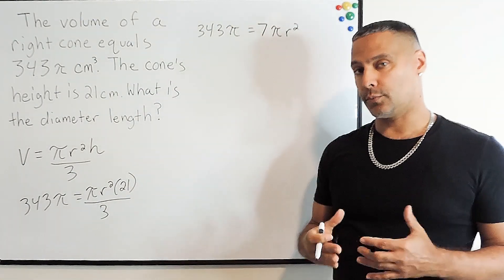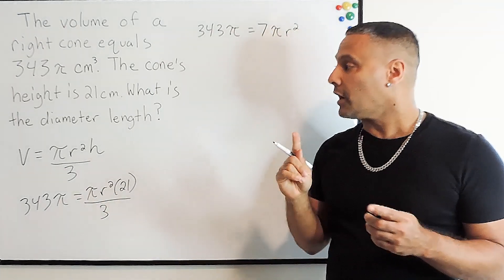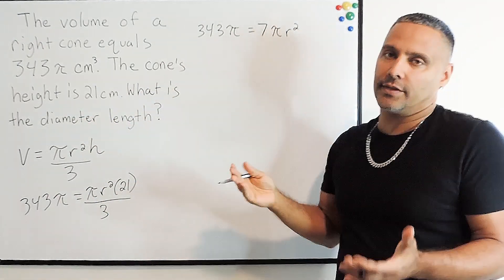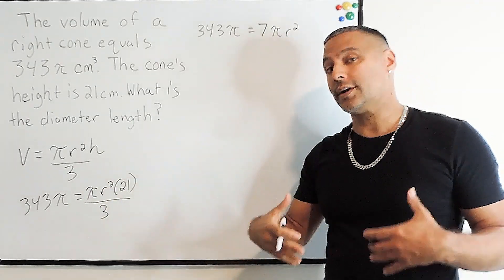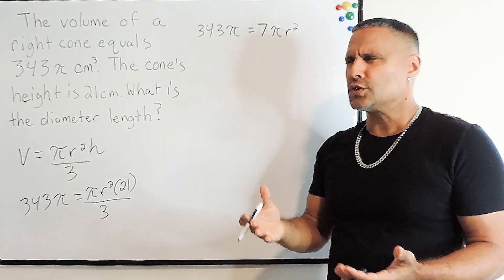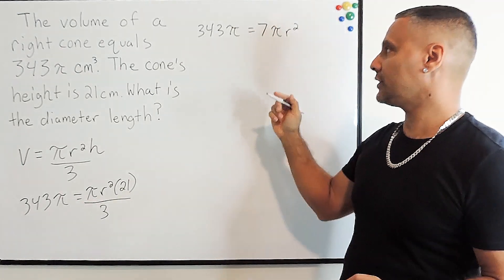Now remember, we are looking for the diameter length. If we know what the radius length is, we know what the diameter length is, because whatever the radius is, we just double that, and that is the diameter. So we're really solving for r in this equation.